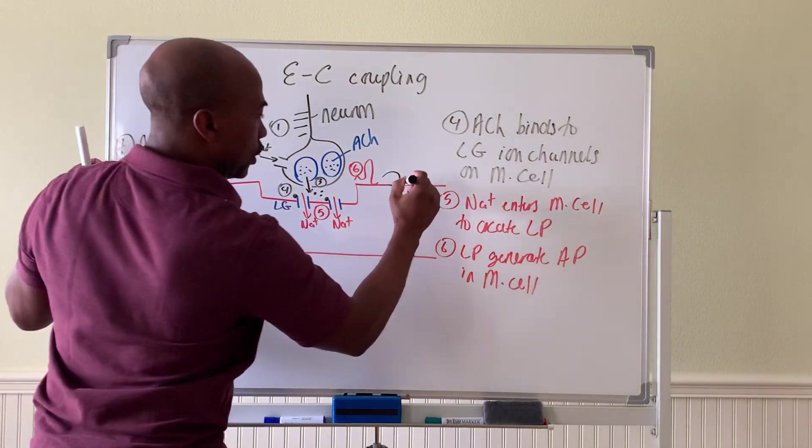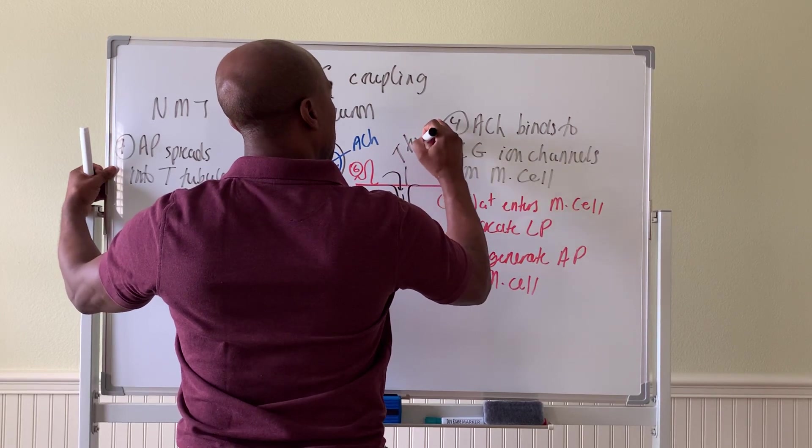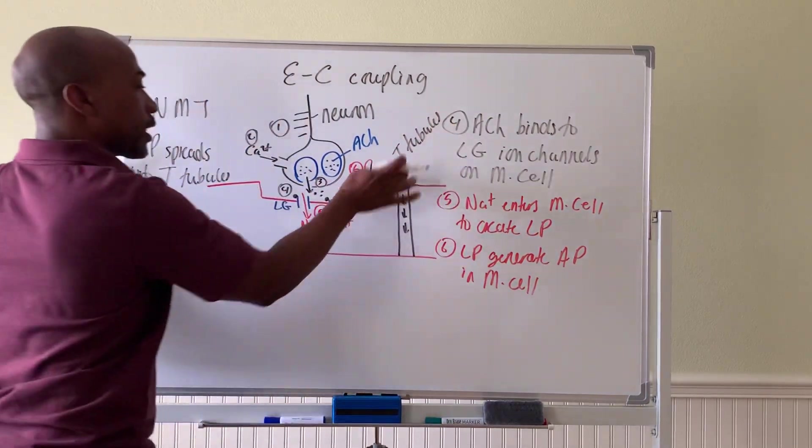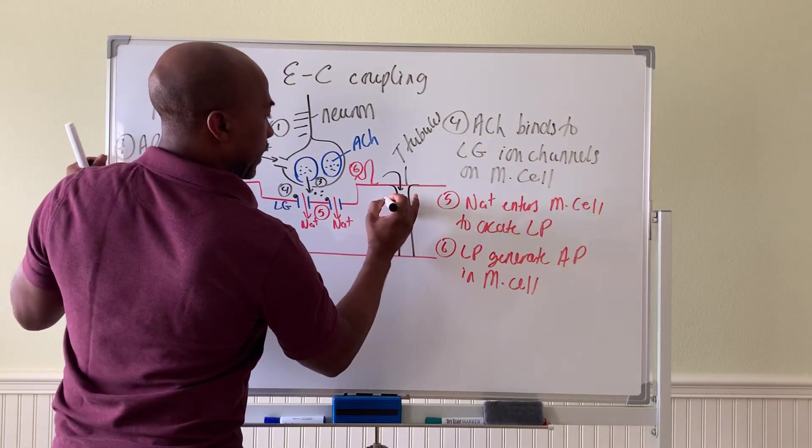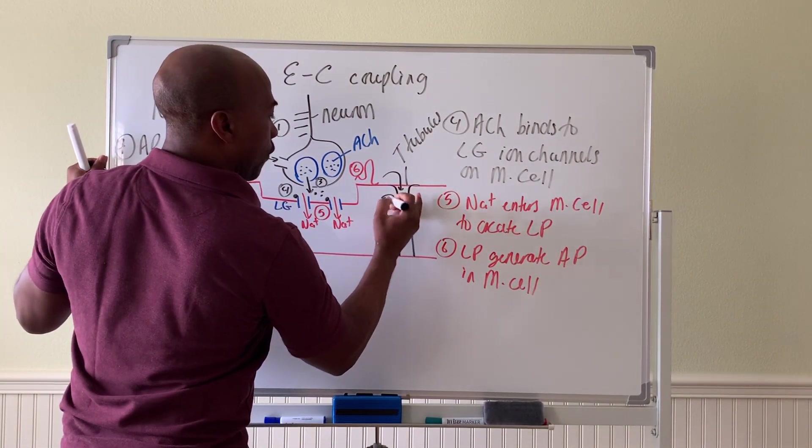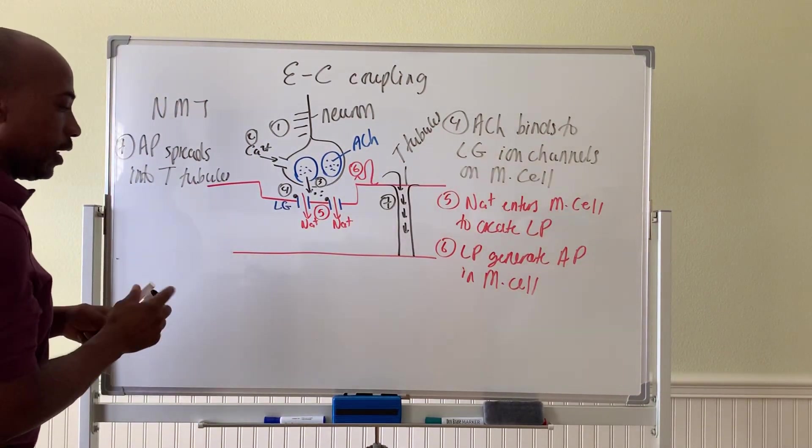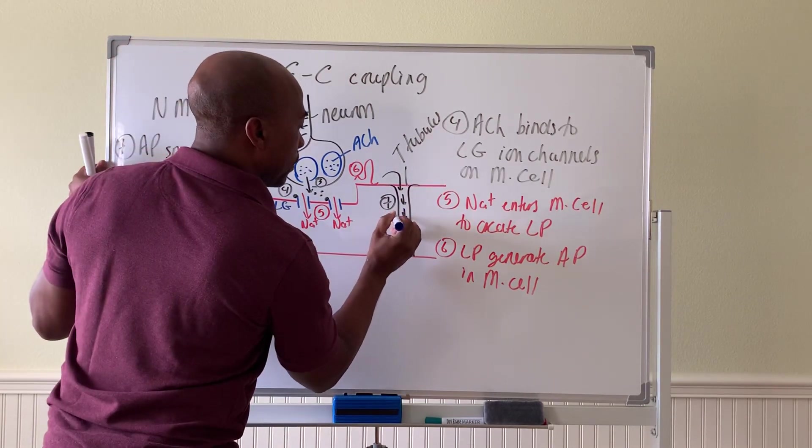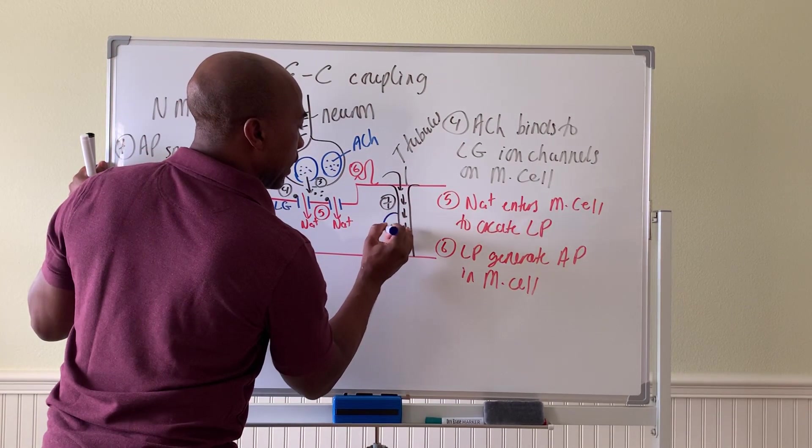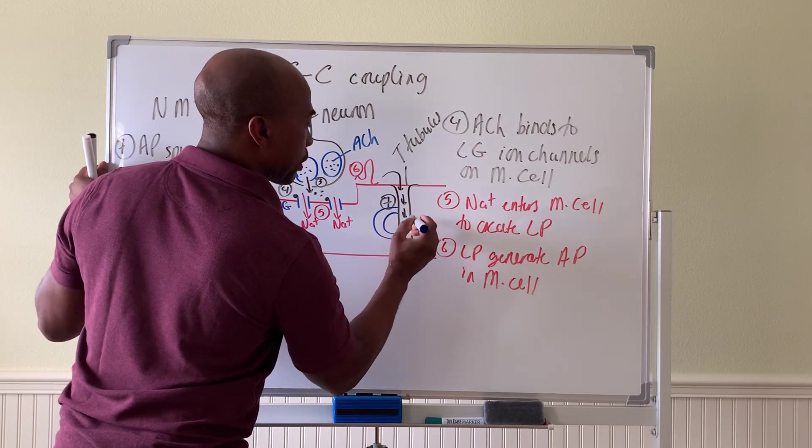So in step seven, action potential spreads into T-tubules. Again, these are called T-tubules, like bridges across the cell. And so then as the wave of electricity spreads across the cell through T-tubules,